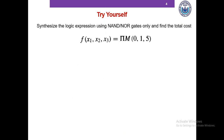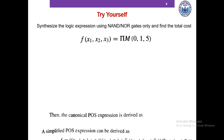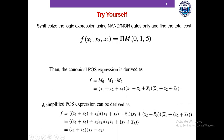Please pause this video and try to solve this problem, and then we'll match our answers. Here we have the product M0, M1, M5, meaning the function's output is 0 for the 0th, 1st, and 5th rows. Capital M is max term, so if we write the function in terms of max terms we get M0 AND M1 AND M5, and spelling out the max terms gives us this expression.